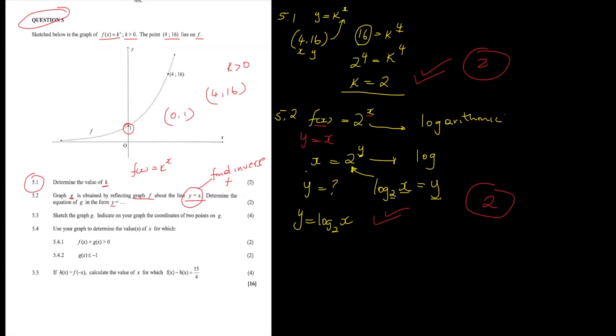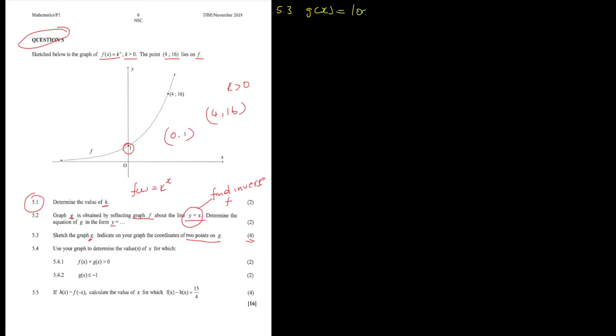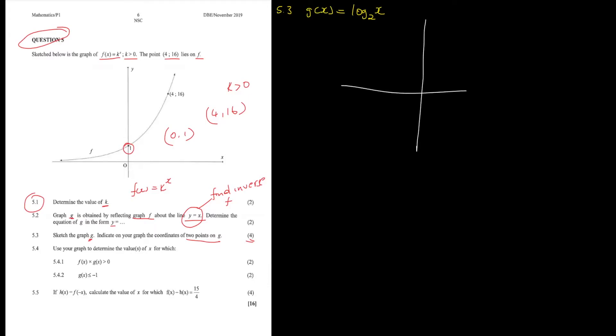That's already 4 marks in the bag. These are questions you should always get without struggling because the concept doesn't change — you just apply the basics. Moving to Question 5.3, which has 4 marks: sketch the graph of g and indicate the coordinates of two points on g. This isn't difficult because you already have all the information you need: g(x) = log base 2 of x.